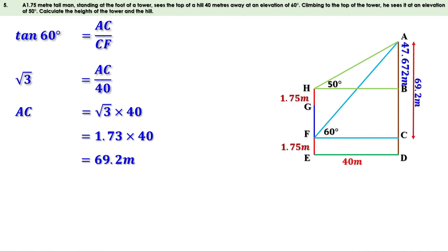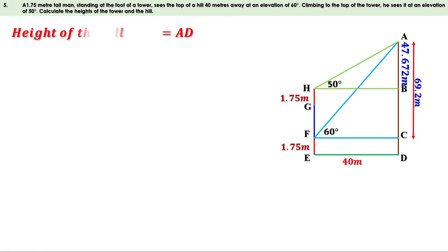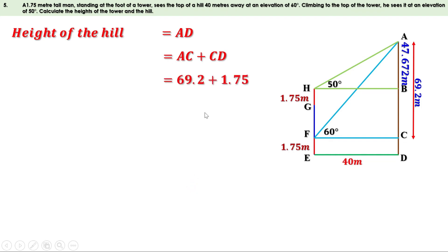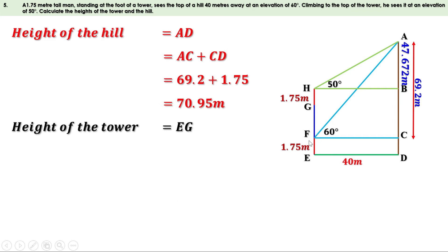We have got AB and AC. The height of the hill is AD, which equals AC plus CD. AC is 69.2 and CD equals EF which is 1.75 meters. So AD equals 69.2 plus 1.75, giving 70.95 meters. The height of the hill is 70.95 meters.